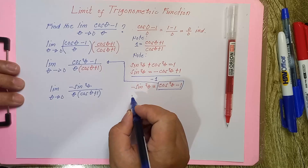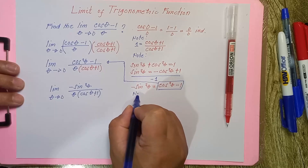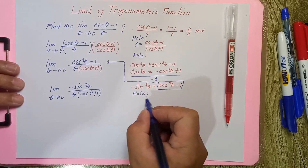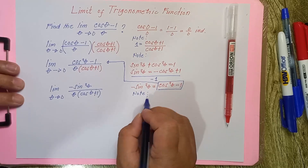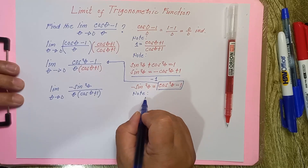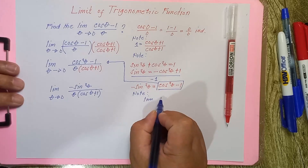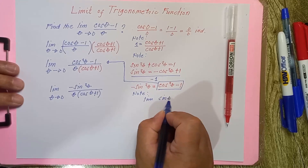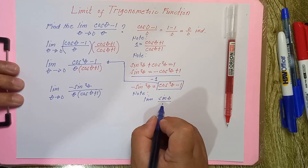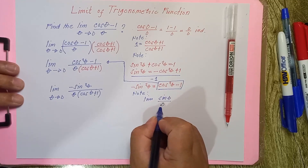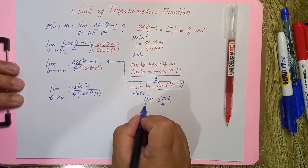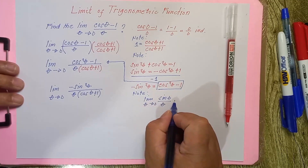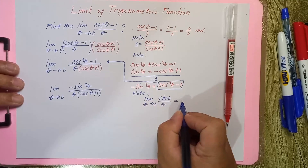We need to remember one of the theorems: the limit of sine theta over theta, as theta approaches 0, equals 1. We will use this theorem to continue solving.